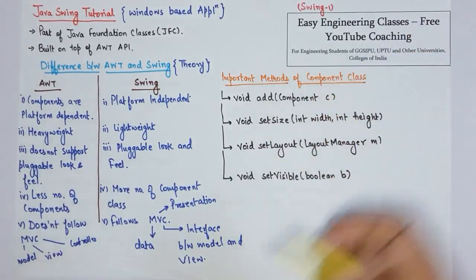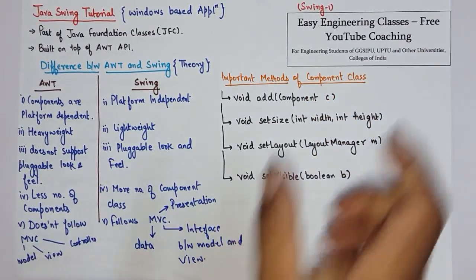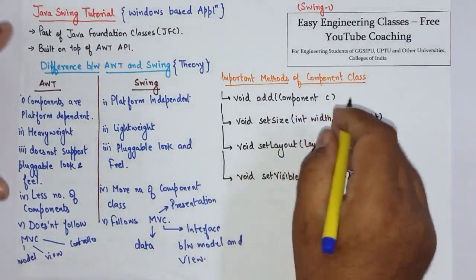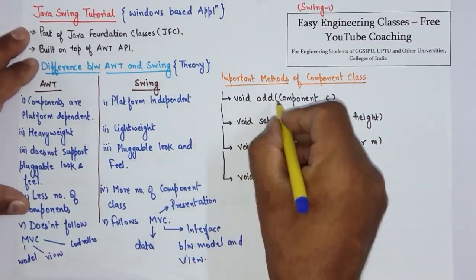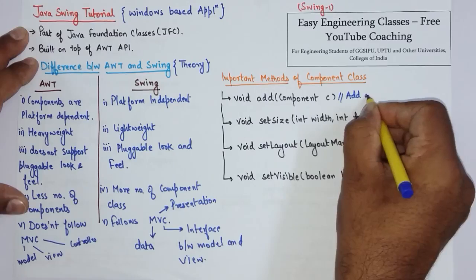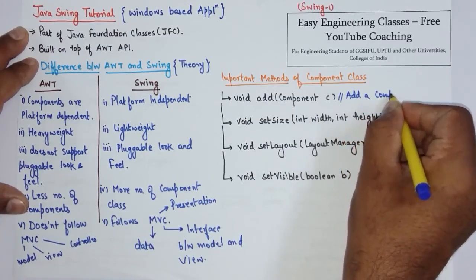Now we will see some of the important methods of component class which are exactly same as AWT. First is void add component C, which is used to add a component to a container, so it is used to add a Swing component to a container.